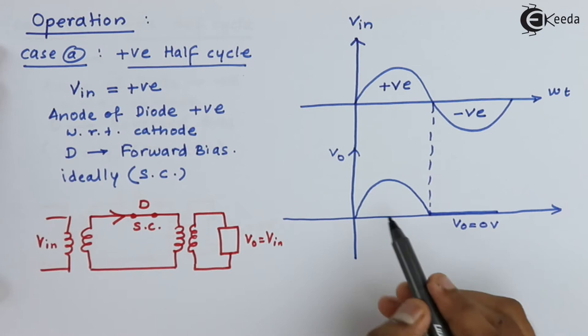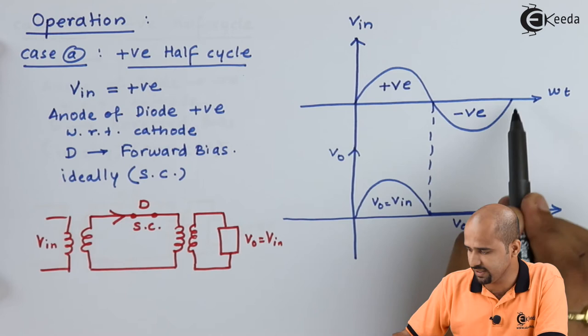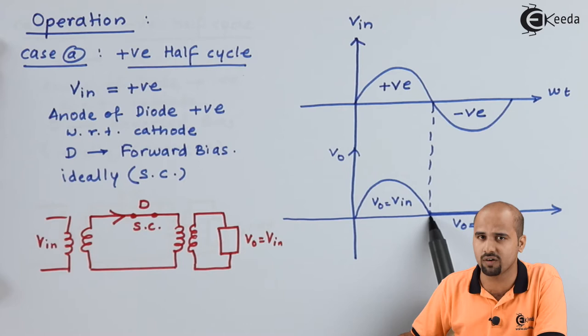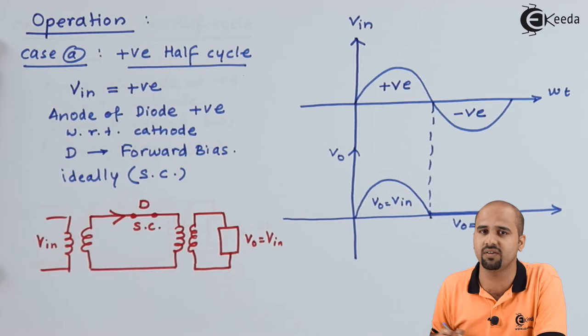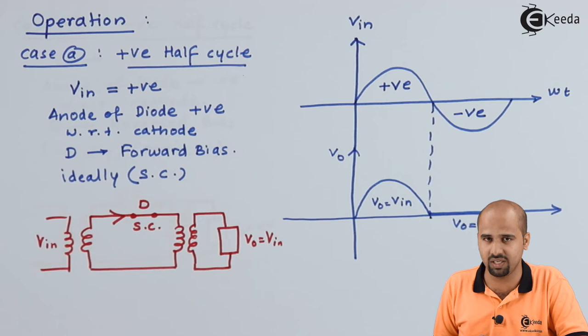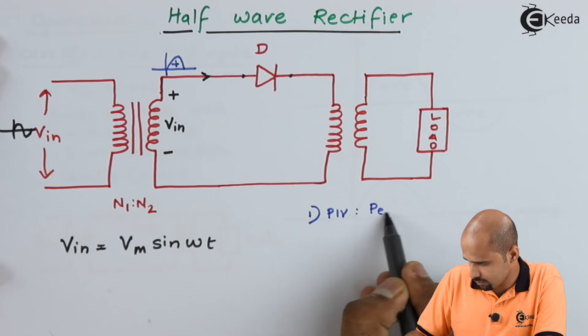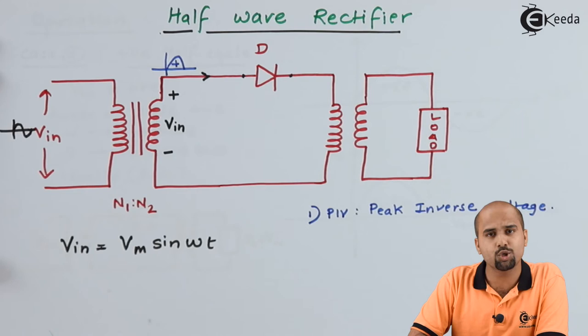Now, why is it called a half wave rectifier? Out of the complete wave, only half of the wave is getting rectified, and that is why it is called a half wave rectifier. We also need to learn about the PIV rating, which is a very important part of this half wave rectifier. PIV stands for peak inverse voltage, one of the key parameters to learn about the rating of this half wave rectifier.